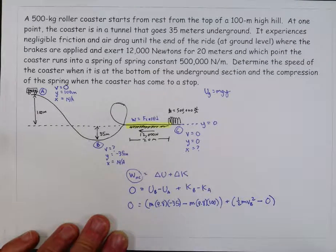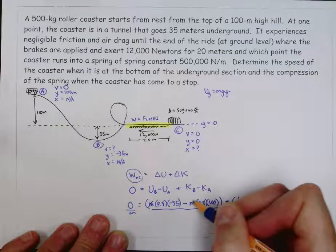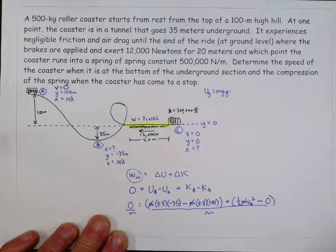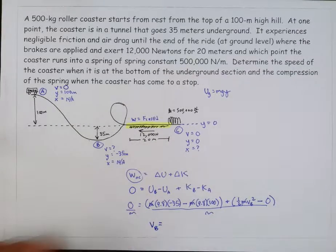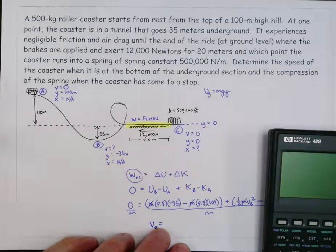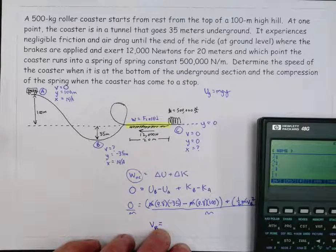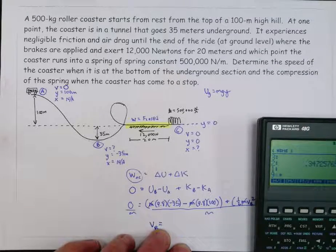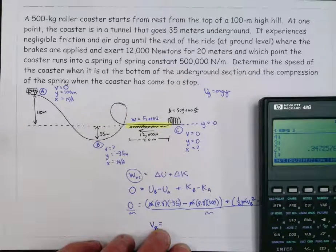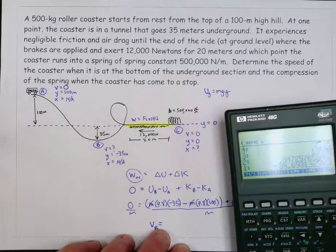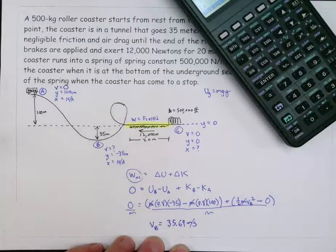You'll notice I didn't put the mass in. I kind of knew that we could divide both sides by mass. And since every single term has a mass in it, the mass cancels out. It just makes our equation a little bit easier. And then we can just simply solve for the speed at b. So that's just something you need to do on your calculator. I'll try to do that real quick here. So 9.8 times negative 35, and we have 9.8 times 100. You have to add those things together, and then to find the speed, multiply by 2, and take the square root, and I get 35.69. So the speed at b is 35.69 meters per second. And that's our answer.